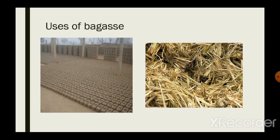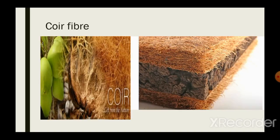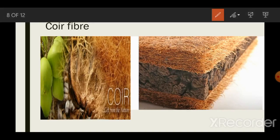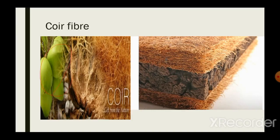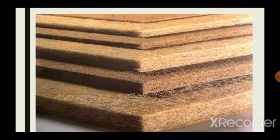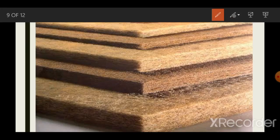Next we have coir fiber, obtained from the coconut shell. Coir fiber has a wide range of uses — not only in the construction industry but also in handicraft and textile industries. In the construction industry, thin fibers are obtained by machinery and thatched together. As you can see in the image, this is used as thermal insulation for building purposes.